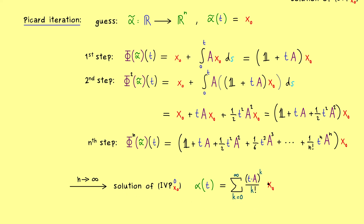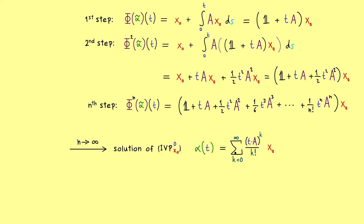And for this reason this matrix that comes out of this limit gets a special name: it is simply called the matrix exponential. And you see why — because the formula is exactly the one we know for the exponential function. The only thing that is new is that we put a matrix instead of a number into the exponential function. Otherwise the definition as a series looks literally the same. For this reason one also often writes simply e to the power tA — it represents the same thing, namely the well-defined limit of the partial sums. So this is the matrix exponential: a matrix function which gives us the solution of our system of linear differential equations.